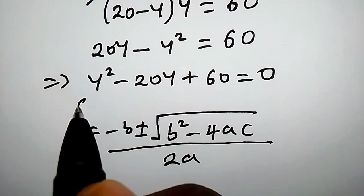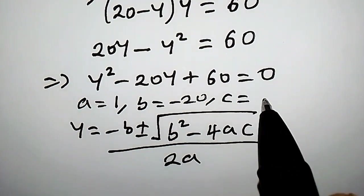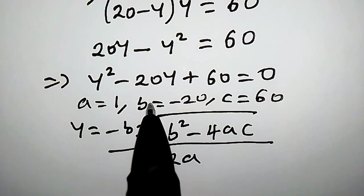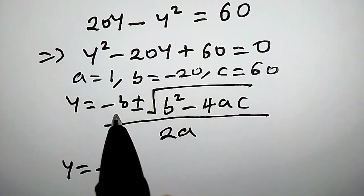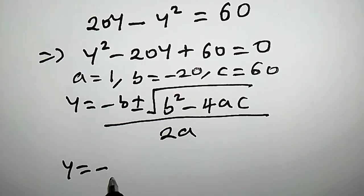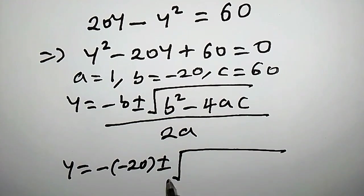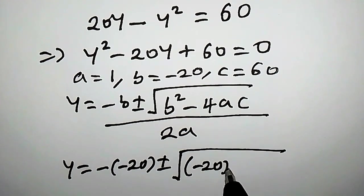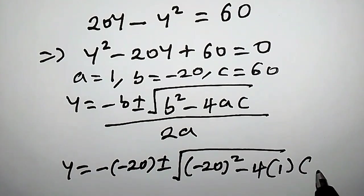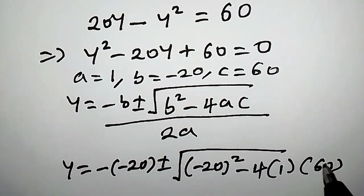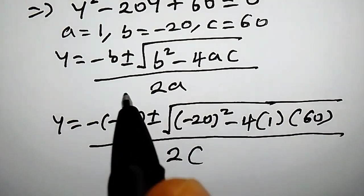From this equation, a is equal to 1, b is equal to negative 20, and c is equal to 60. Let us now plug in these values into the right-hand side. So we have y equal to negative b — b is negative 20 — so negative of negative 20, plus or minus square root of b squared, which is (negative 20) squared, minus 4 times a, which is 1, times c, which is 60. Everything divided by 2 times a, which is 1.